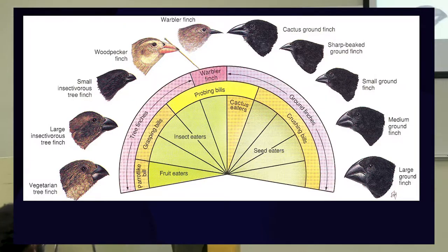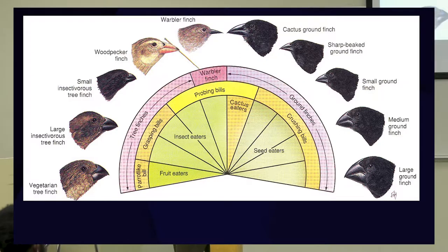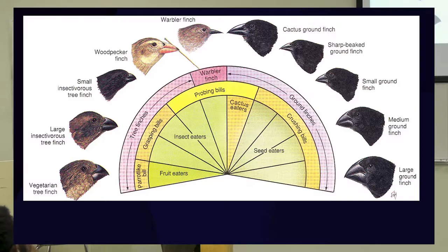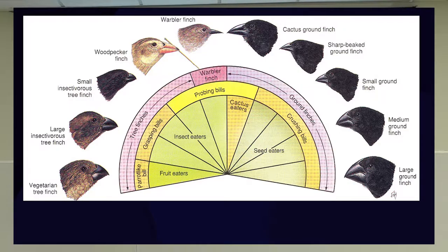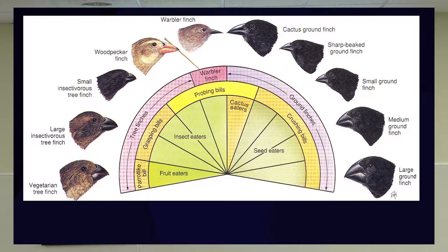You have this finch here, the vegetarian tree finch, a really short, really stout bill. You have this little guy up here, the warbler finch, a very delicate needle-like bill. And you have all kinds of variations between them, fur coloring, and bill size and shape. And so he thought, did God create unique finches for all those islands in the Galapagos? Probably not.